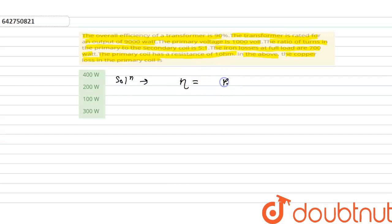P_output is given, and from here we will calculate P_input. Efficiency is 90%, so 90/100 equals 9000/P_input. Both cancel out, giving 100. From here, P_input equals 10,000.